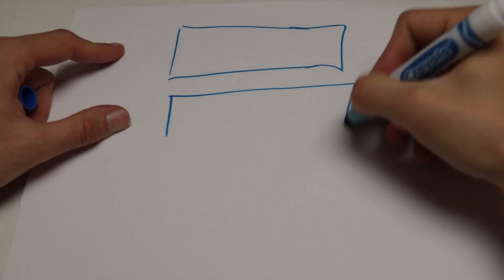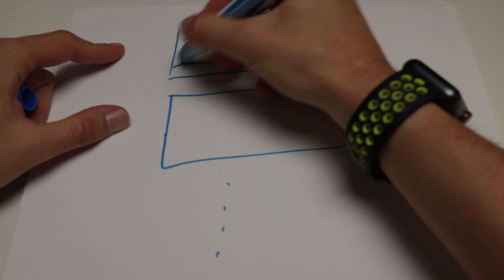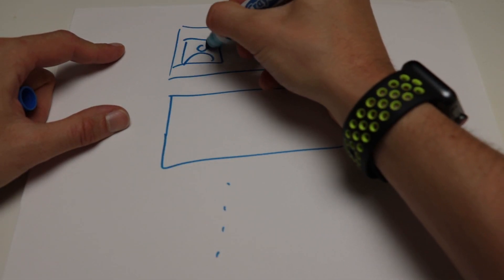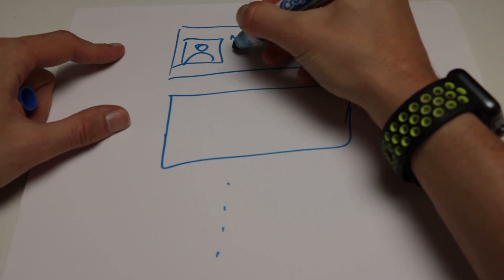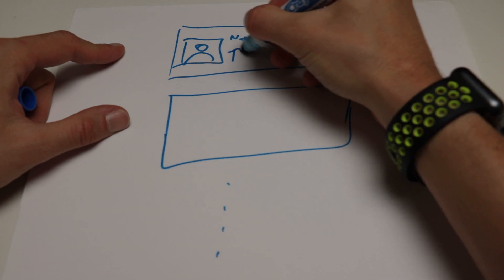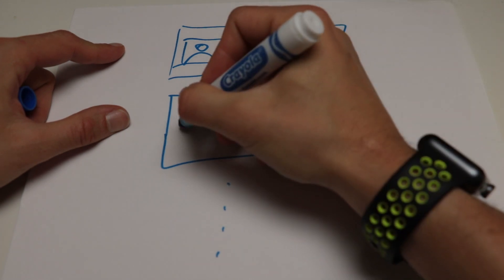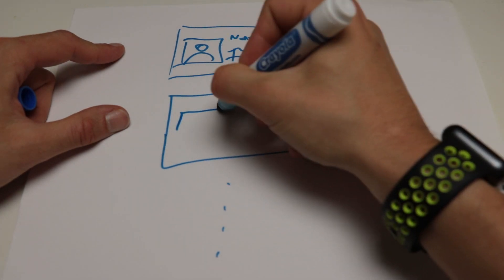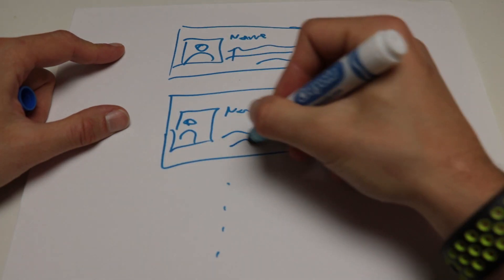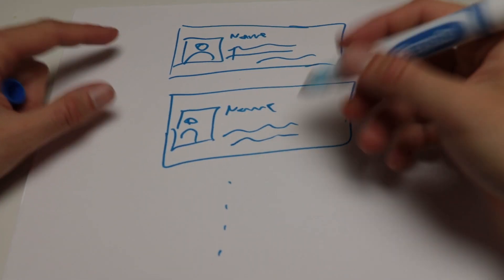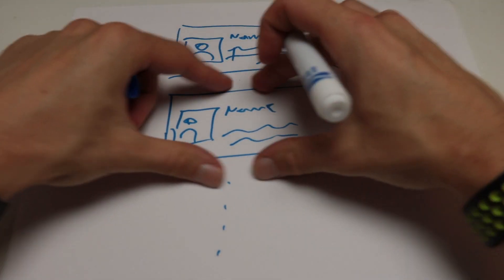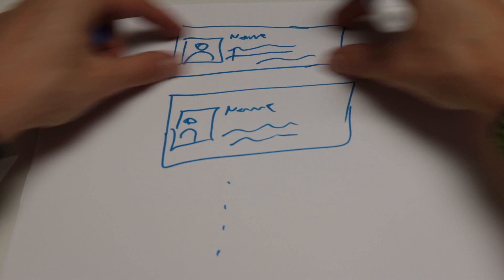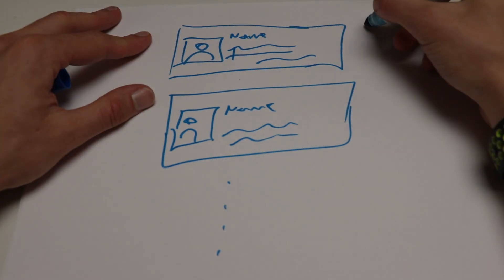Each message has a little avatar with a person in it, maybe a name, and some text, and they all kind of just repeat like that. The idea is that because all of these look the same, you can make each of them a component.